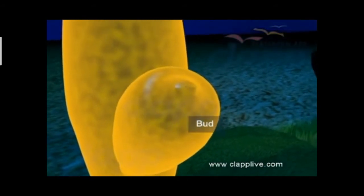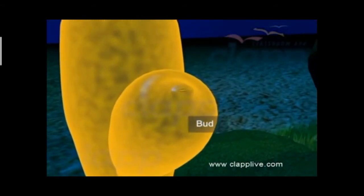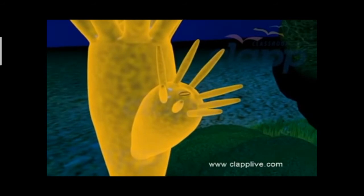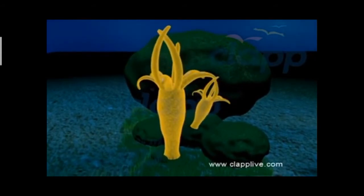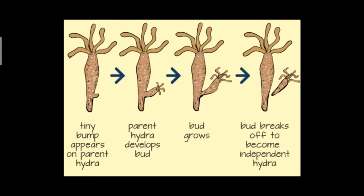Followed by tentacles, this newly formed bud will eventually separate from the parent hydra. Look at this picture — it explains the complete process of budding. New individuals develop from the buds in hydra. This type of asexual reproduction is called budding.